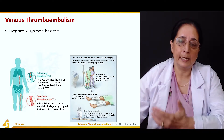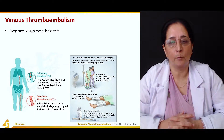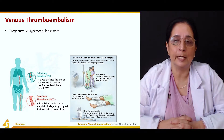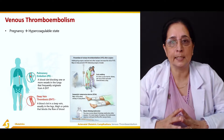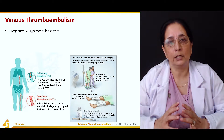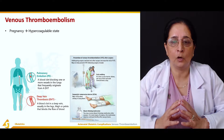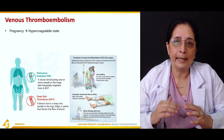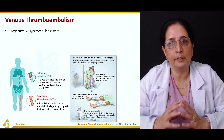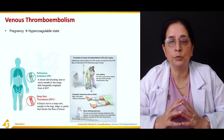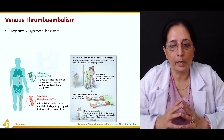During pregnancy there is alteration in the thrombotic and fibrinolytic systems. These systems normally prevent blood clot formation through lysis of blood clots. If there is alteration in these two systems, thromboembolism results.